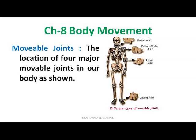You can see the position of each joint in the slide. The ball and socket joint is shown in the shoulder part. The hinge joint is shown at the elbow. The gliding joint is shown in the feet. These are the movable joints where movement is possible.